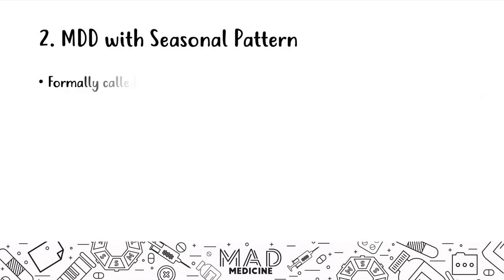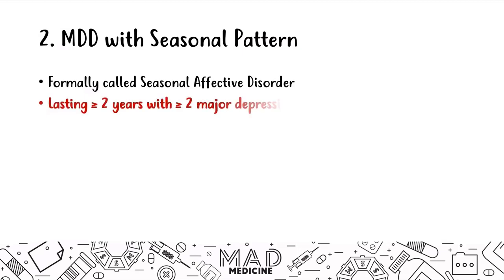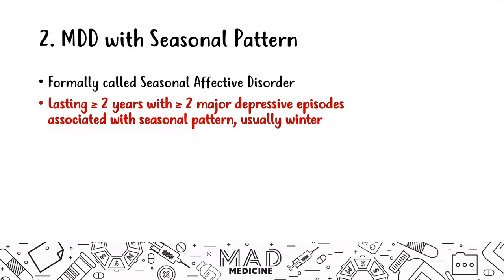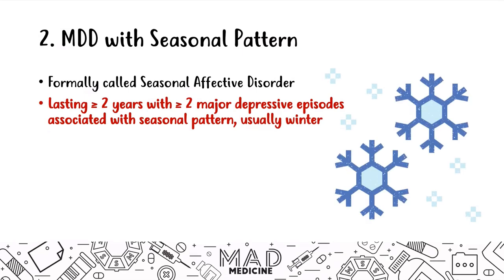Moving on to major depressive disorder with seasonal pattern, formally known as seasonal affective disorder. It usually lasts greater than two years with two or more major depressive episodes associated with a change in seasonal pattern. Surprisingly, this usually happens in the winter because during winter months, daylight is short, it's more dark, it's cold, and you stay indoors a lot — all of which end up affecting people.